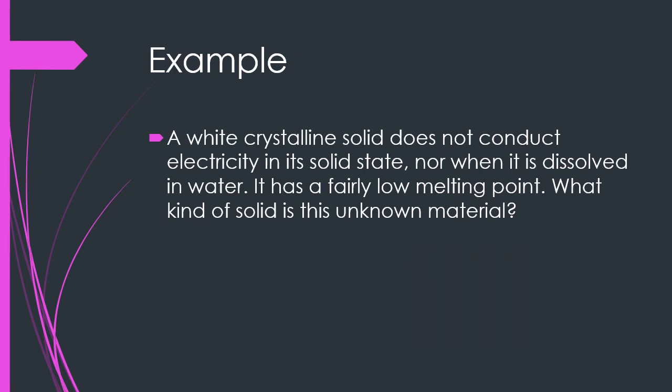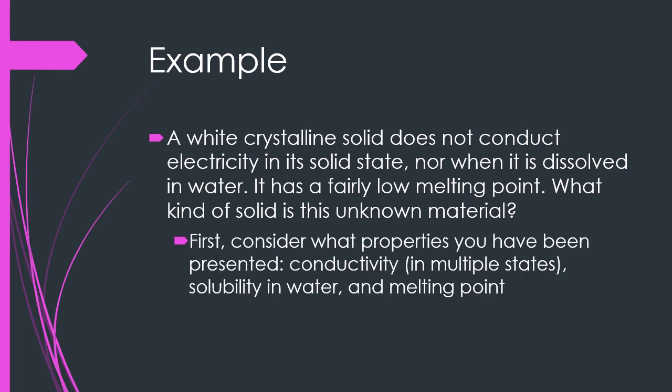From the description of a solid, you should be able to identify what kind of solid it is. Let's look at an example: a white crystalline solid does not conduct electricity in its solid state, nor when it is dissolved in water. It has a fairly low melting point. What kind of solid is this unknown material? We should first consider the properties we have been presented — it will not conduct electricity as a solid, nor in its aqueous state, and it can be dissolved in water.